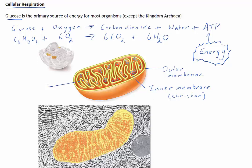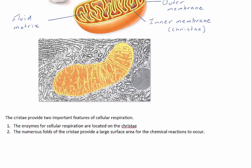The cristae provide two important features of cellular respiration. One, the enzymes for cellular respiration are located on the cristae. And two, the numerous folds of the cristae provide a large surface area for the chemical reactions to occur.